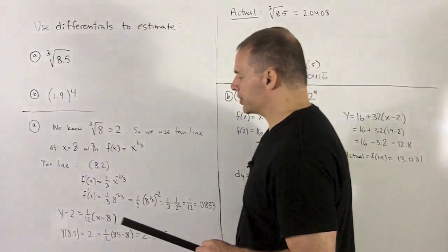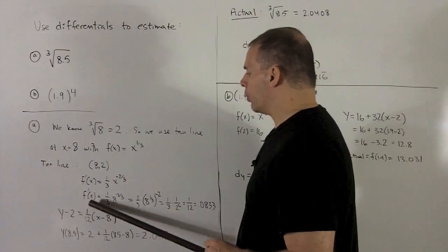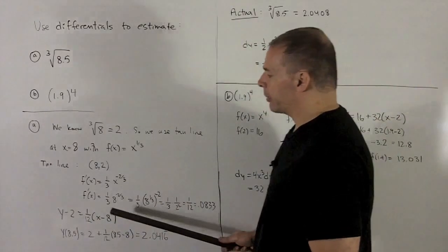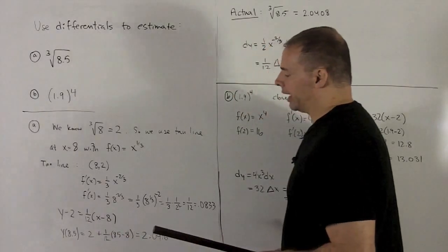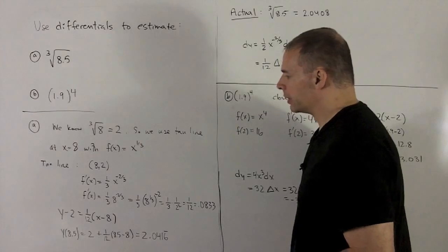Okay, so what we're looking at is tangent line is going to be y minus 2 equals one-twelfth times (x minus 8). So that's just given by putting my point in and by putting in the slope of the tangent line at our point 8, which is the derivative.